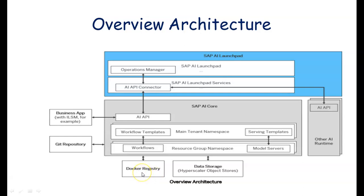The Docker registry collects the images referenced by the templates. The Docker repository inside the registry is used for Docker images. Kubernetes is used to collect clusters and scales of data used in the AI pipelines. The AI API is used for managing artifacts and workflows such as training scripts, data models, and model servers across multiple runtimes.